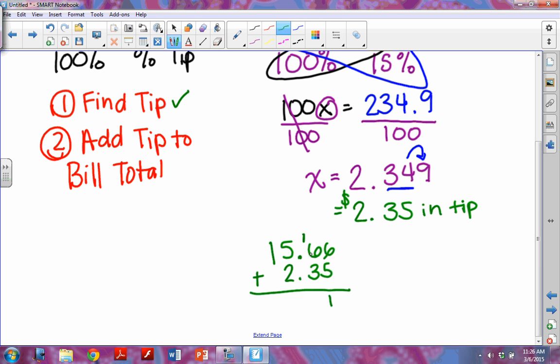6 plus 5 is 11, carry my one. 6 plus 1 is 7, plus 3 is 10. Bring my decimal point down, make sure I carry my one. 5 plus 2 is 7, plus 1 is 8, and then I just bring my other one down. So that means that I pay a total of $18.01 for my bill at Chili's.